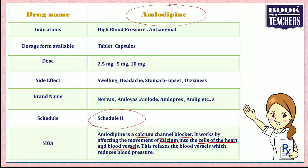Amlodipine blocks calcium from entering into the cells of the heart and blood vessels, which affects the contraction of muscles. It reduces the vasoconstriction of the heart, leading to vasodilation, which ultimately reduces blood pressure. So as a calcium channel blocker, it relaxes the blood vessels and reduces blood pressure.